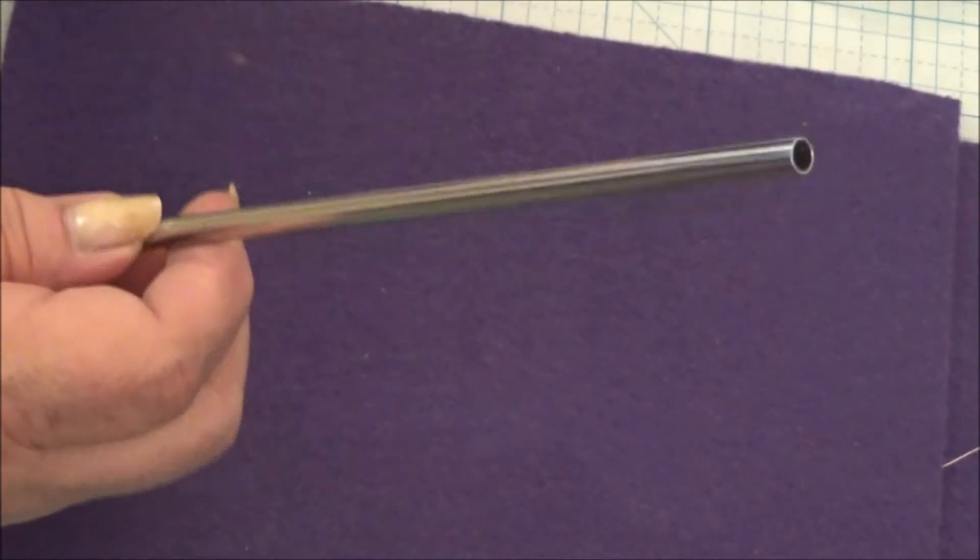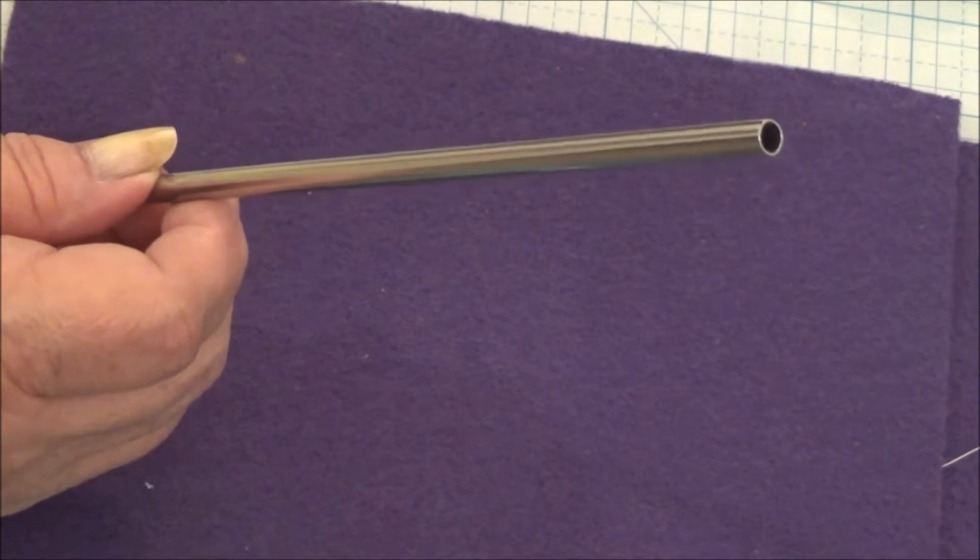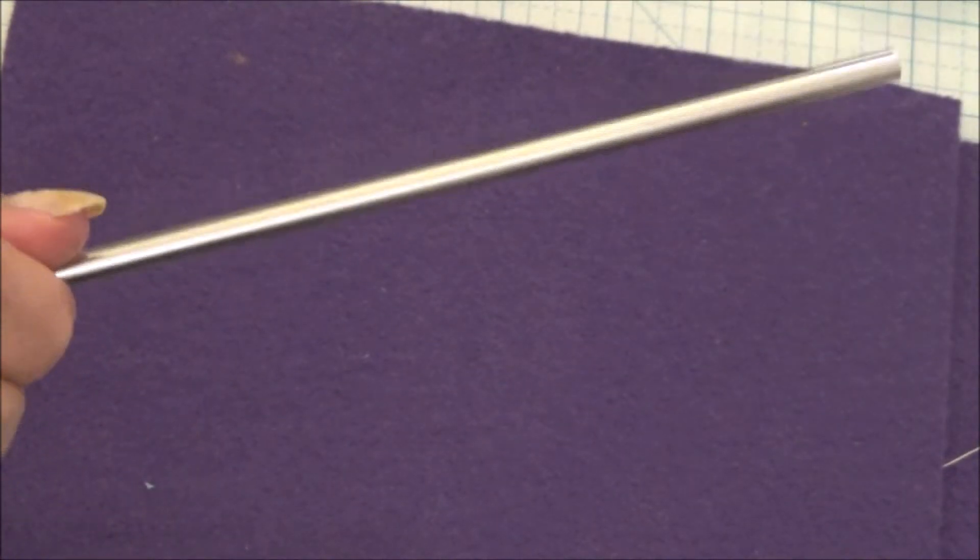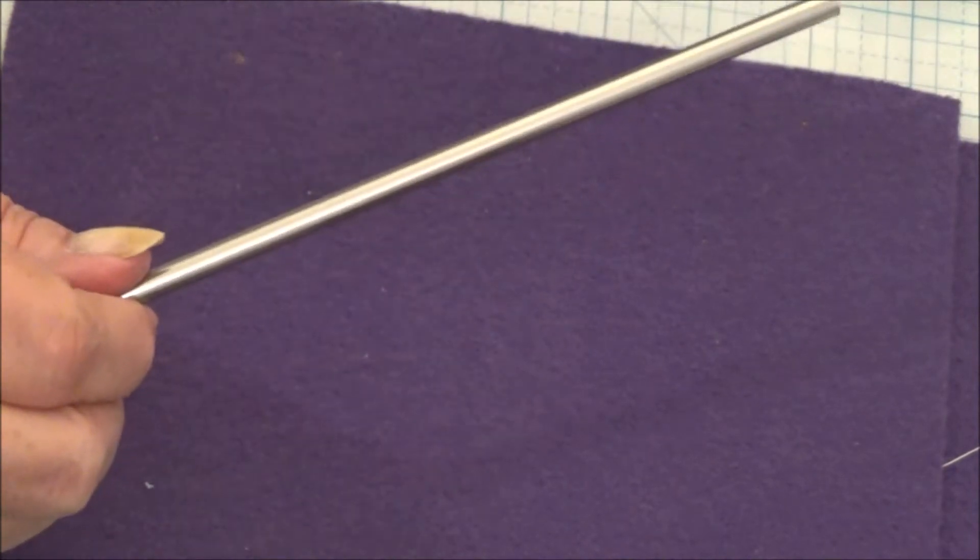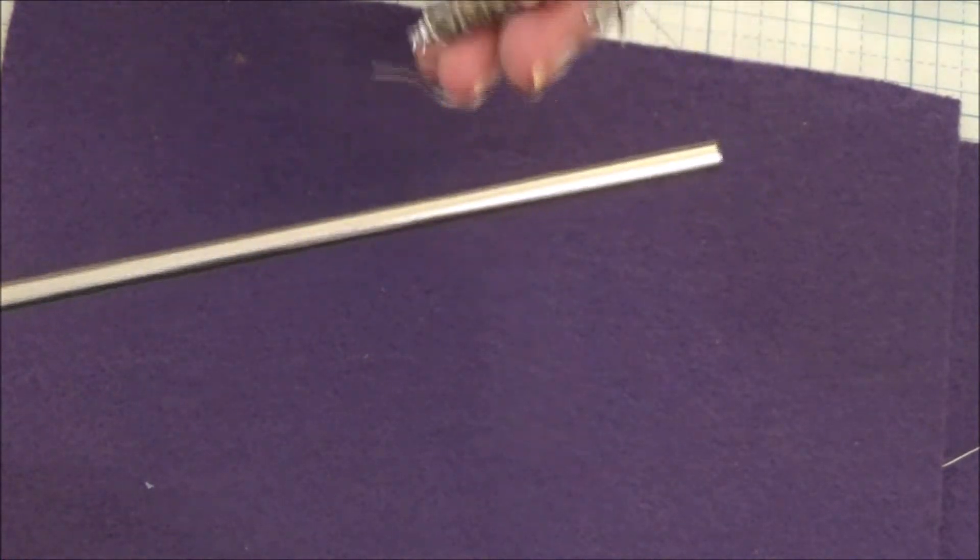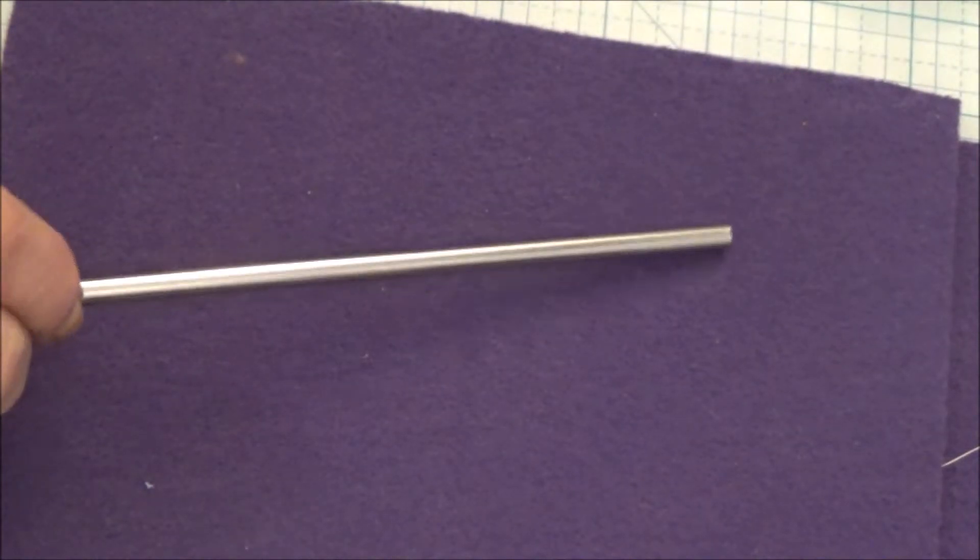But I rolled the beads on the metal tube that comes with the kit. And that's the size they are and I baked them on the metal tubing.